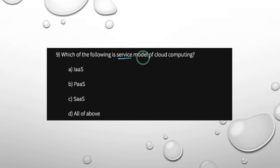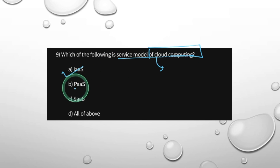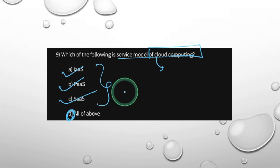Which of the following is a service of cloud computing? The services are infrastructure as a service (IaaS), platform as a service (PaaS), and software as a service (SaaS) — all of the above are cloud computing services.